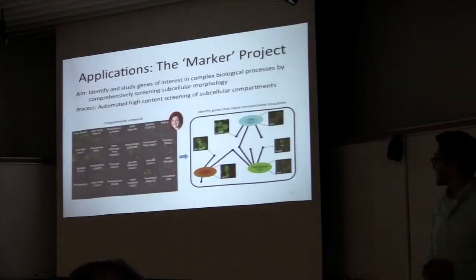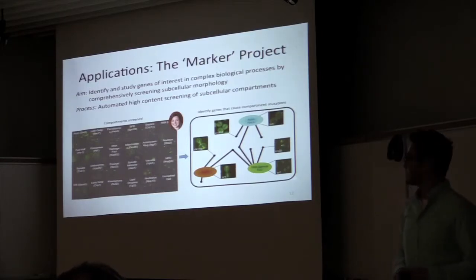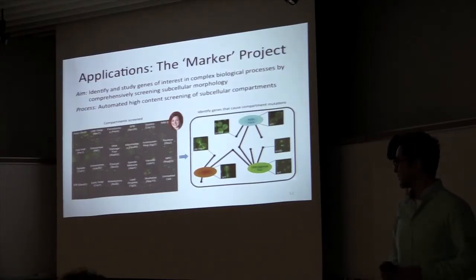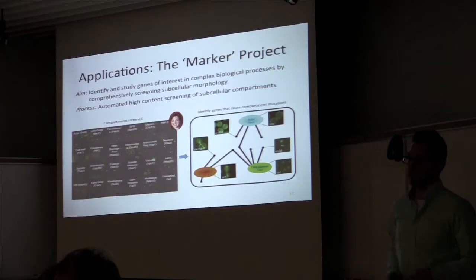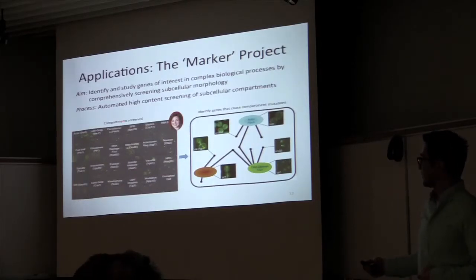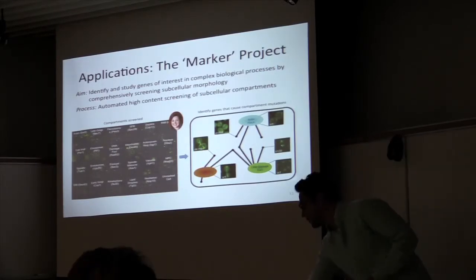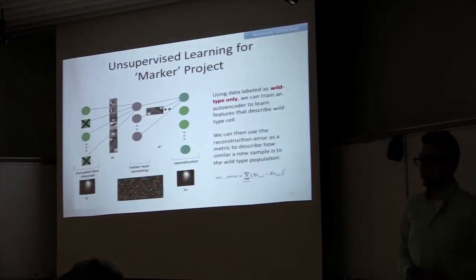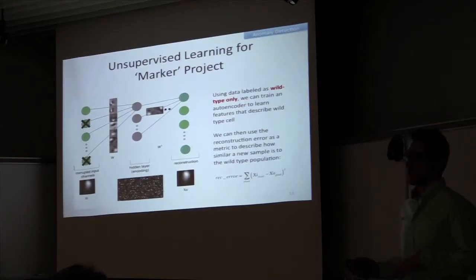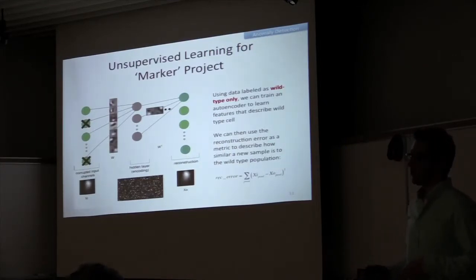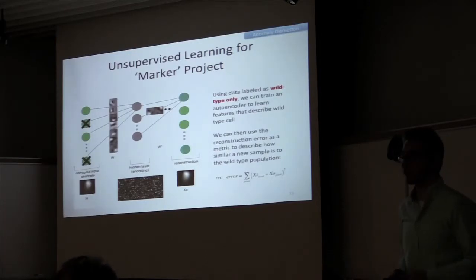A second example is a project by Erin Stiles, where she's tagged 23 different subcellular compartments and wants to study how different genetic deletions affect the morphology of these compartments. The overall goal is to generate a network where gene deletions cause aberrant compartment phenotypes. For this project, I again used a denoising autoencoder, but in this case it's only trained on cells labeled as wild-type. The idea is that we can use the reconstruction error itself as a metric for whether a sample belongs to the wild-type population — given that the network is only trained on wild-type data, a wild-type cell will presumably have a lower reconstruction error.